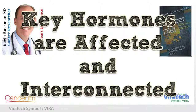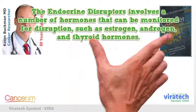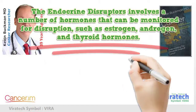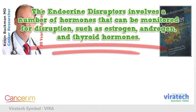Key hormones are affected and interconnected. Endocrine disruptors involve a number of hormones that can be monitored for disruption, such as estrogen, androgen, and thyroid hormones.